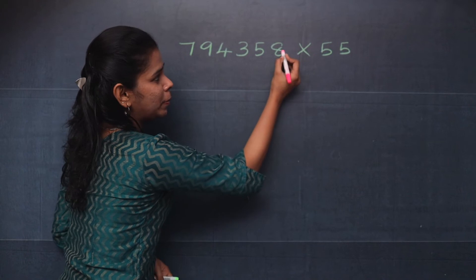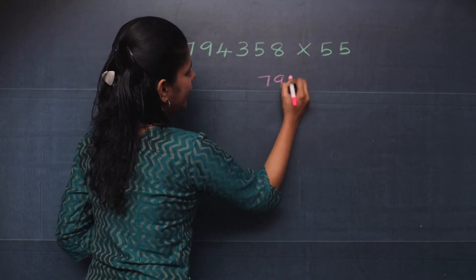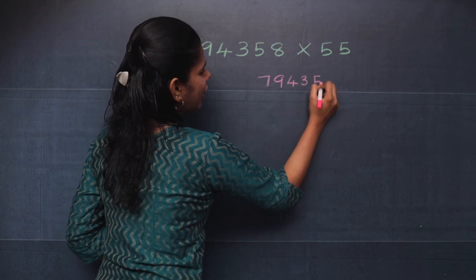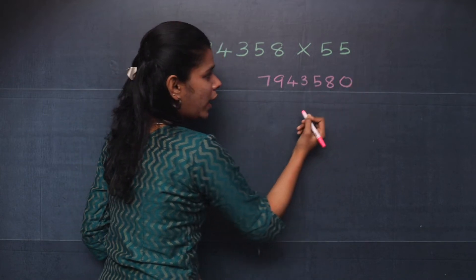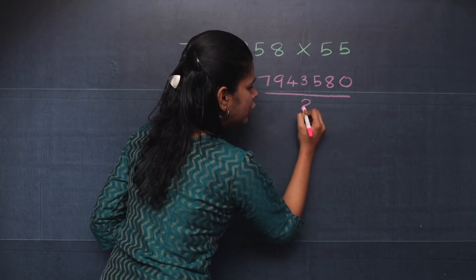The first step is you will put 0 here. So it becomes 7, 9, 4, 3, 5, 8, 0. And the next step is you will divide this by 2.